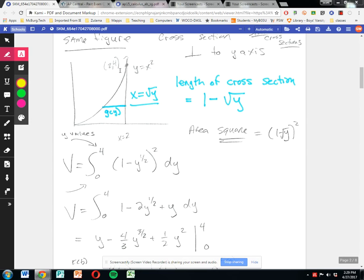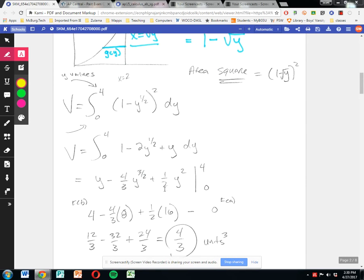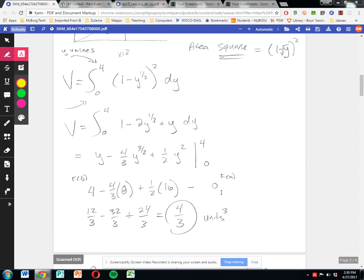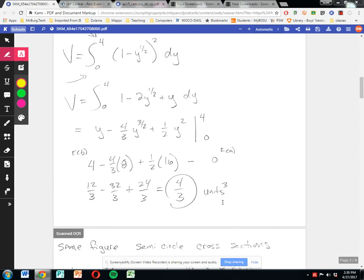This time we look at from 0 to 4, because again, we're looking at y values to bind it. Volume is 0 to 4 of the cross-section squared, 1 minus y to the 1/2 squared dy. We do a little bit of math from there. Fundamental theorem of calculus, f of b minus f of a. We bring it home with some, again, units cubed.